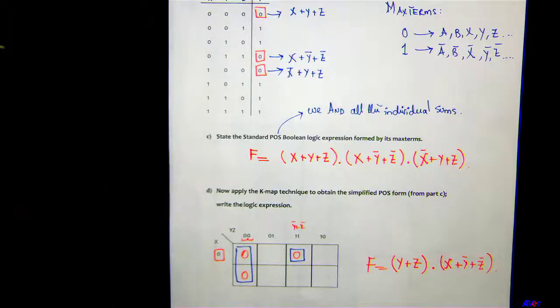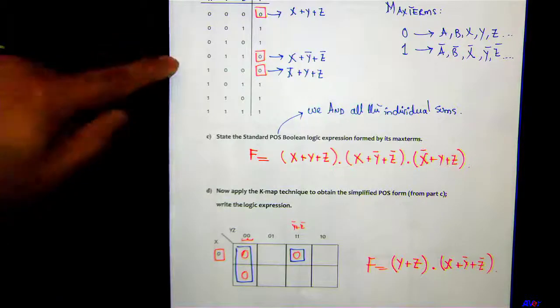Okay, so this is a simplified expression using K-map for the truth table that we have over here.